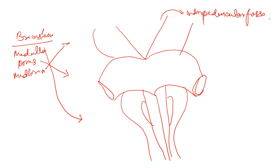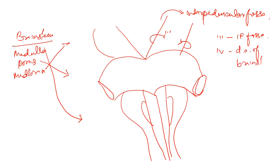The third nerve originates in the interpeduncular fossa. Now, the fourth nerve arises from the dorsal aspect of the brainstem. This is the only nerve that arises from the dorsal aspect of the brainstem. So the third nerve is ventral and the fourth nerve comes from the dorsal, from behind.